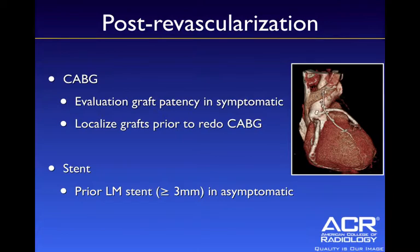Consider evaluating bypass grafts immediately post-op prior to discharge, as grafts may fail due to competitive flow from the native coronary artery. You can also localize grafts prior to redo coronary artery bypass grafts — primarily ensuring the left internal mammary artery is not adherent immediately behind the sternum. If it is, surgeons will approach off-midline rather than directly through the sternum. For stent evaluation, the only appropriate indication per these guidelines is a prior left main stent greater than three millimeters in an asymptomatic patient.